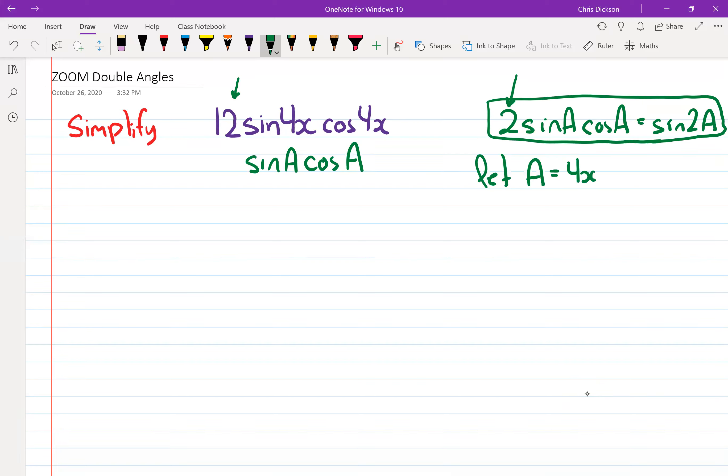Now the problem is there's also this 2 in front. You see it's 2 here and I've got a 12 in front here. So I'm going to make a 2 appear in front of that so it looks exactly like the identity, but what number times 2 is 12? Well that would be 6. So it's really 6 multiplied by this thing in the brackets here.